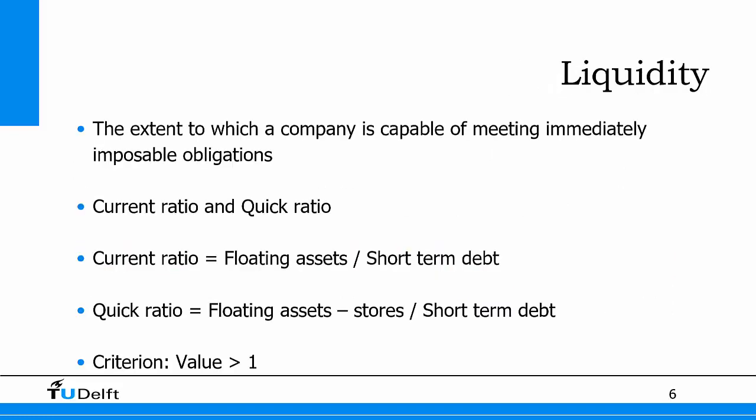The next set: the liquidity ratios. Liquidity is the extent to which a company is capable of meeting immediately imposable obligations. There are two of them: the current ratio and the quick ratio.